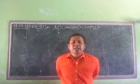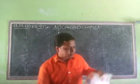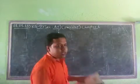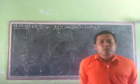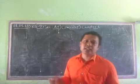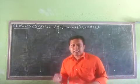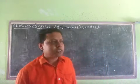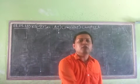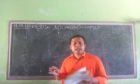Namaskar students. Today we will discuss Chapter 1. Chapter 1 is about machines. When we learn or read this chapter, we come to know that it teaches us to differentiate between natural things and artificial things. Artificial things are basically man-made things — those things which are made by man are called artificial things. Now we will discuss more about natural things and artificial things.